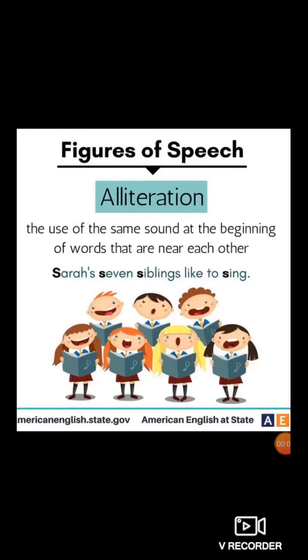So what do we mean by alliteration? Alliteration means the use of the same sound at the beginning of words that are near each other or in one sentence. For example: 'Sarah's seven siblings like to sing.' The first letter S is repeated more than twice in each word, so it is known as alliteration.